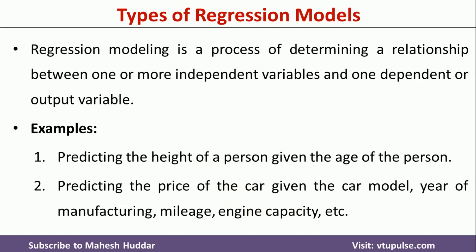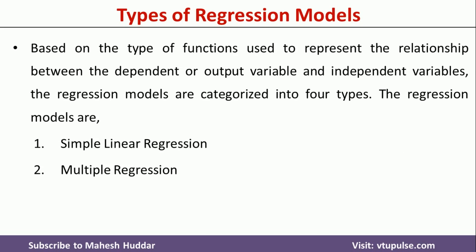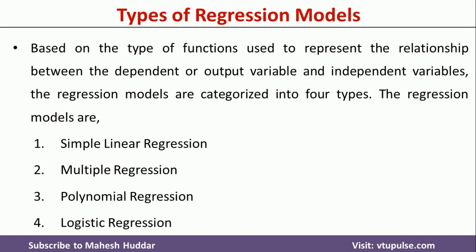In this case, the process of finding or getting the relationship between these independent and dependent variables is nothing but a regression model. Based on the type of functions used to represent the relationship between dependent and independent variables, the regression models are categorized into four types: simple linear regression, multiple regression, polynomial regression, and logistic regression. Now we will try to understand each of these models in detail.